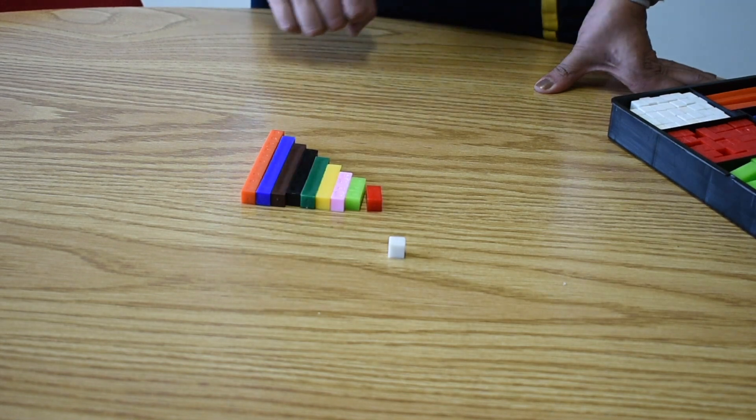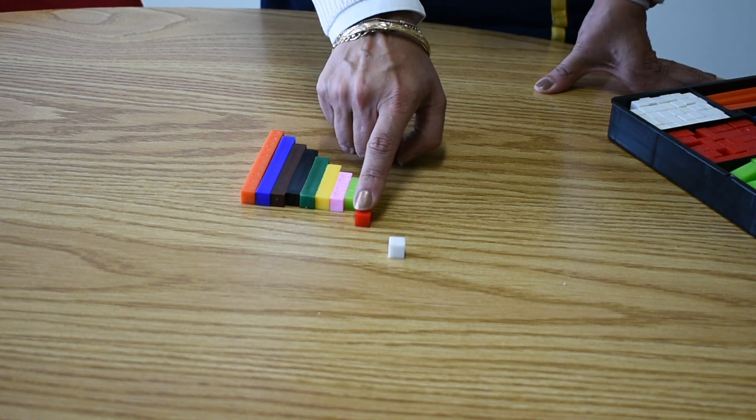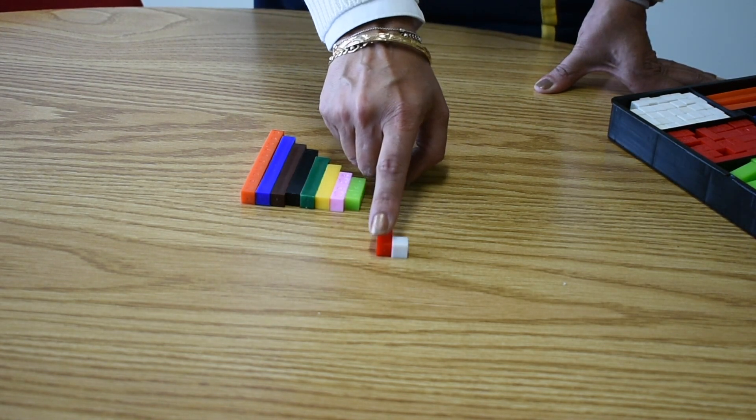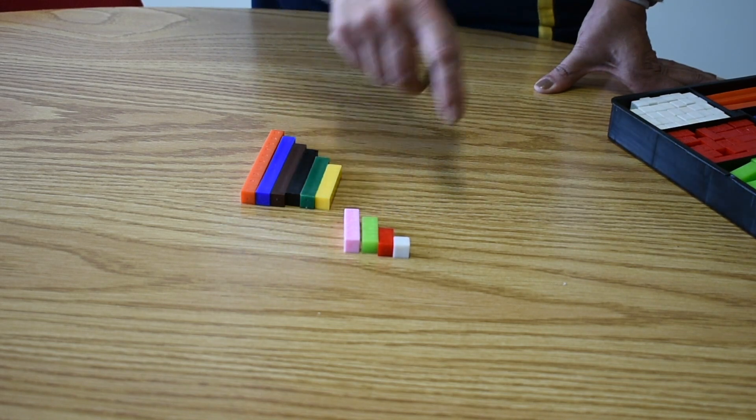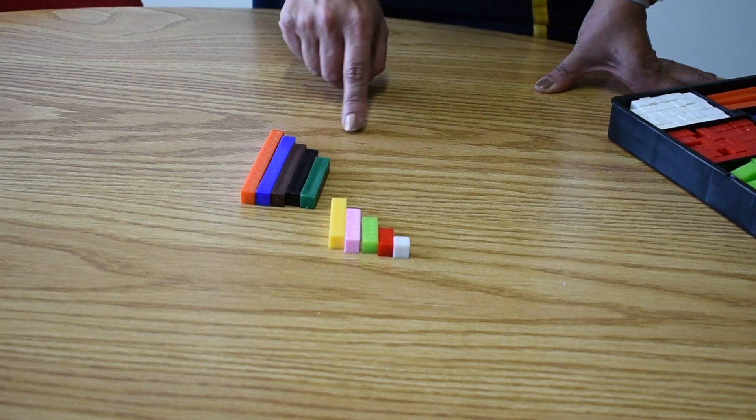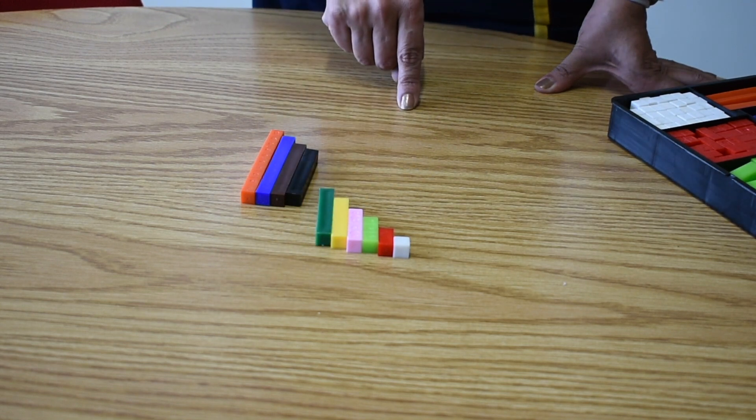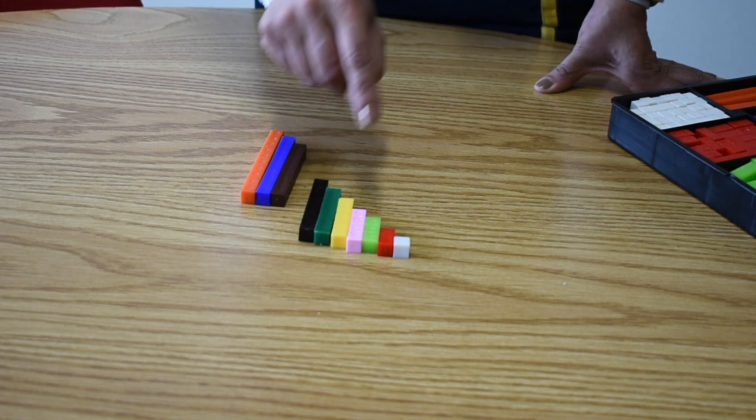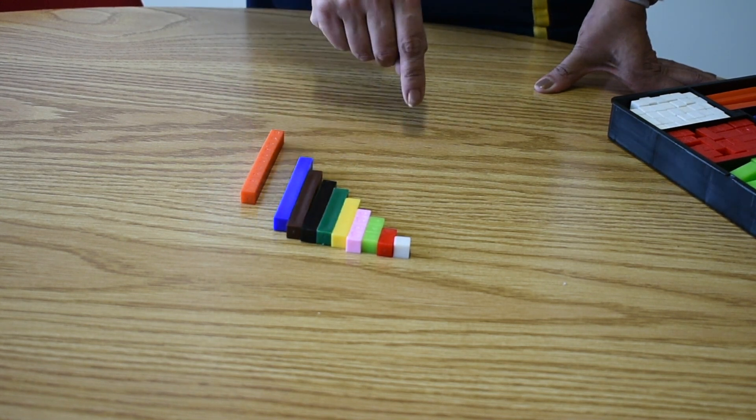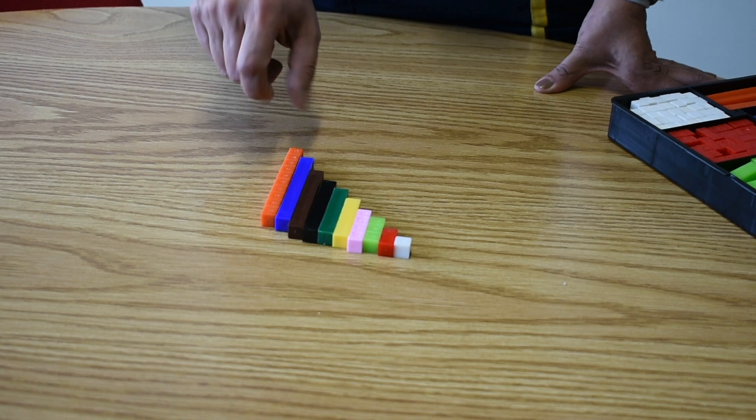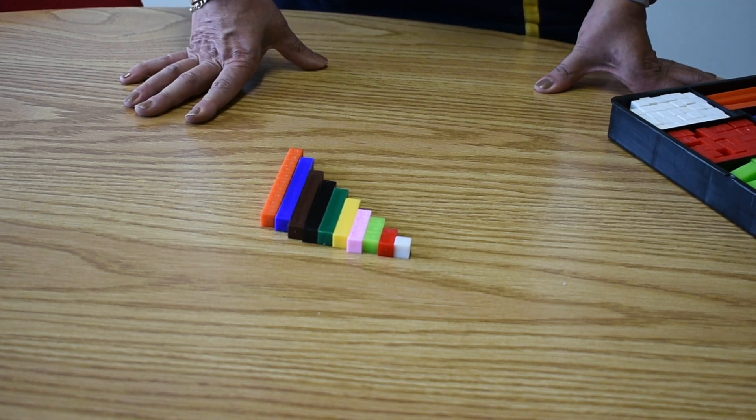the white one is number one, the red one is number two, the green one is number three, the pink one number four, the yellow one number five, dark green number six, black number seven, brown number eight, blue number nine, and the orange one number ten.